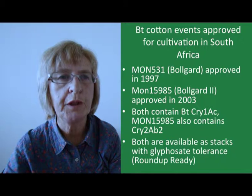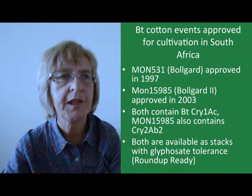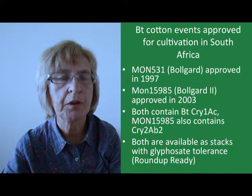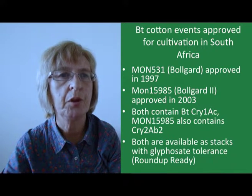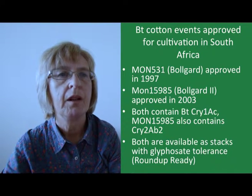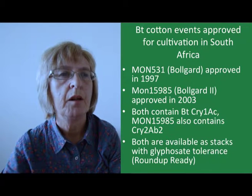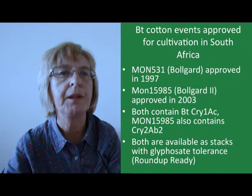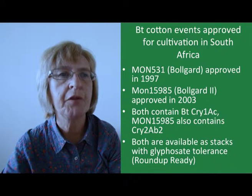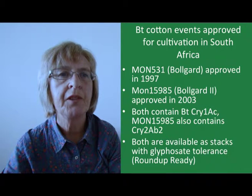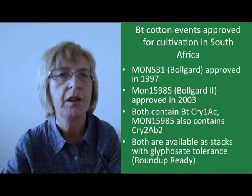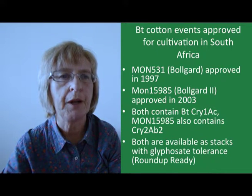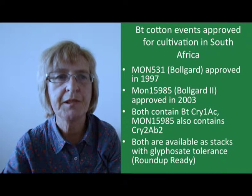Two BT cotton events have been approved for use in South Africa, both produced by Monsanto. MON531, known as Bollgard, was approved very early on in 1997, while MON15985, known as Bollgard 2, was approved in 2003. Both contain the BT Cry1AC gene, but MON15985 additionally contains the BT Cry2AB2 gene, which binds to different receptors in the insect midgut, and this should help to prevent the development of resistance to BT. Both events are also available as stacks with tolerance to the herbicide glyphosate, known as Roundup Ready.